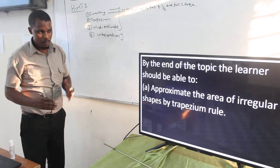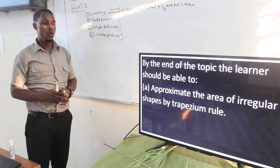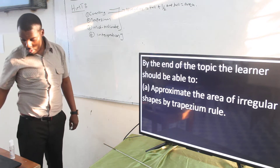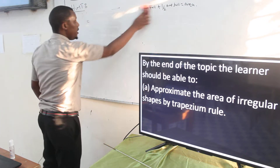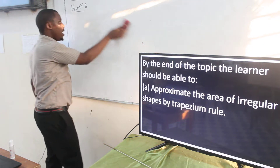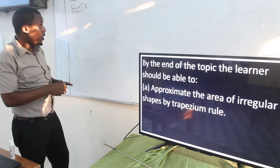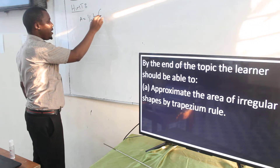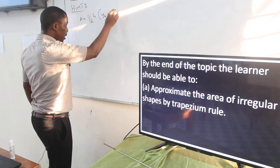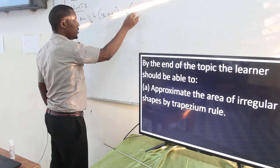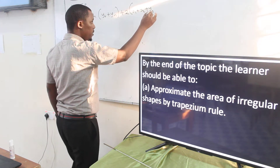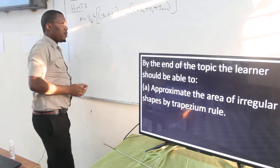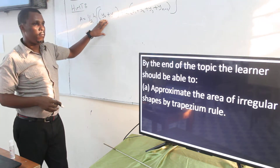So what are the objectives you are supposed to know? By the end of this topic, I want you to be able to approximate the area of an irregular shape using the trapezium rule. The formula — and don't worry about memorizing it, it is in your mathematical table — is: Area = ½ × h × [(y₀ + yₙ) + 2(y₁ + y₂ + y₃ + ... + yₙ₋₁)], and then you put a bigger bracket there.